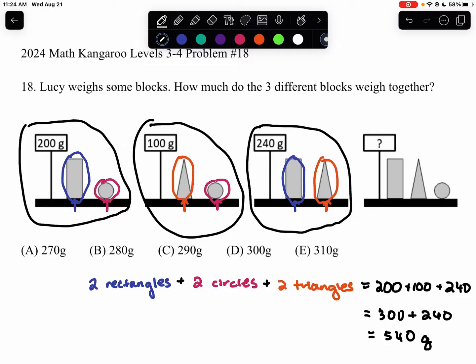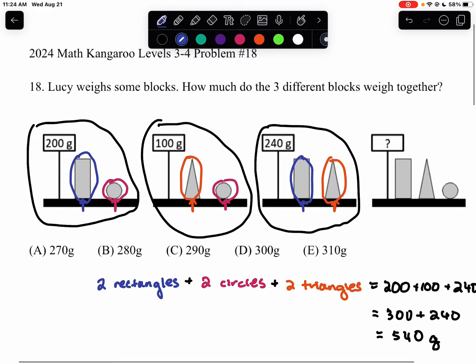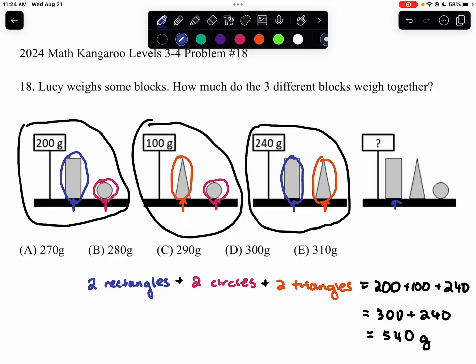But again, that's for two rectangles, two circles, and two triangles. But in our image over here, what we have is one rectangle, one triangle, and one circle. So, we must take 540 and divide it by two to get the sum of one rectangle, one circle, one triangle.